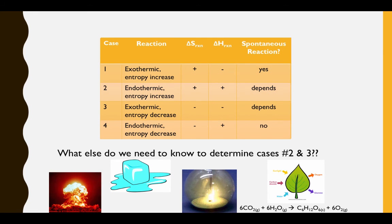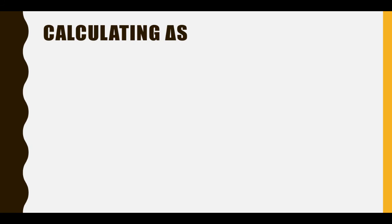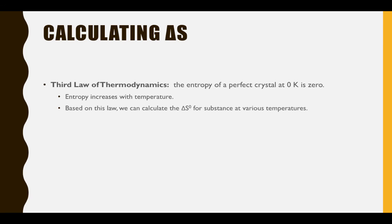In cases where one factor is favorable and one is not, we need additional information. It turns out that spontaneity and thermodynamic favorability are also temperature dependent. For instance, the melting of ice is spontaneous at temperatures above 0 degrees, but non-spontaneous at temperatures below 0 degrees. It's not possible to measure entropy changes directly; however, since delta S is a state function, we can calculate delta S from the initial and final entropy states. The third law of thermodynamics sets an entropy standard, stating that the entropy of a perfect crystal at 0 Kelvin is 0.